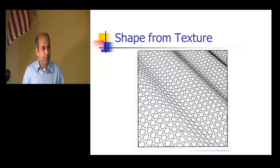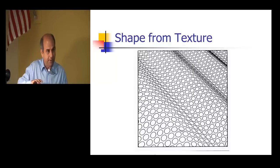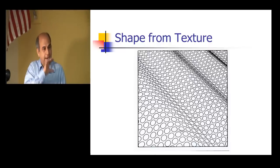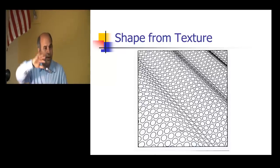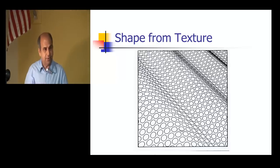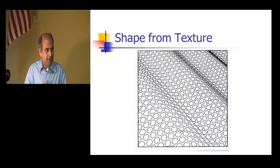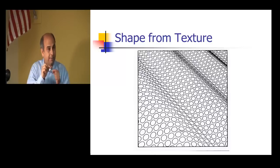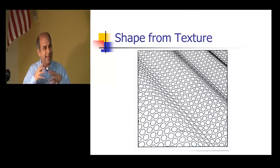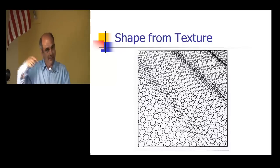Another thing is shape from texture: texture also gives you an idea about 3D shape. If you have a sheet of paper with circles of equal diameter and density spread out, and you orient it differently and take a picture, the size and shape of these circles will change — they become ellipses depending on the orientation, and the density also changes. That gives you a 3D cue using texture. The same thing repeated is called texture, and that's another cue to recover 3D.